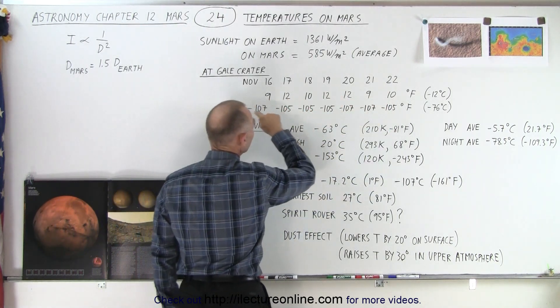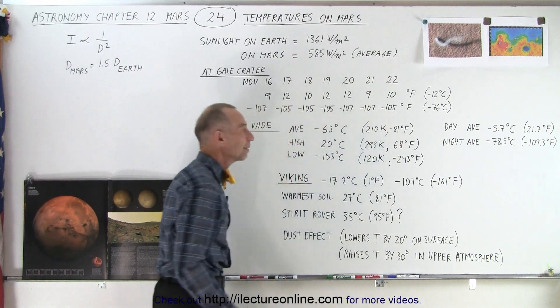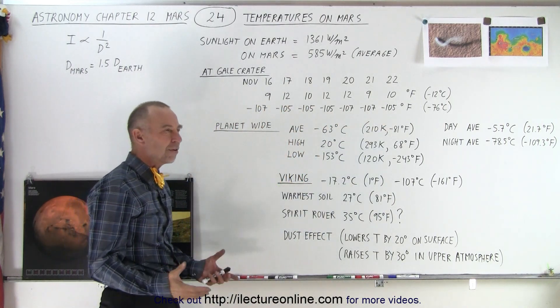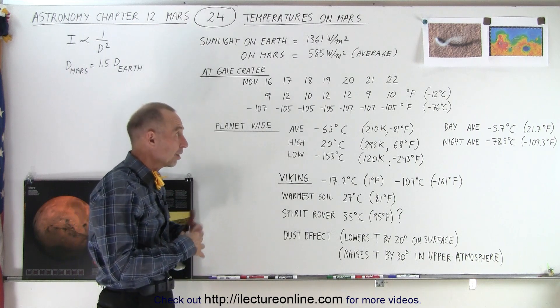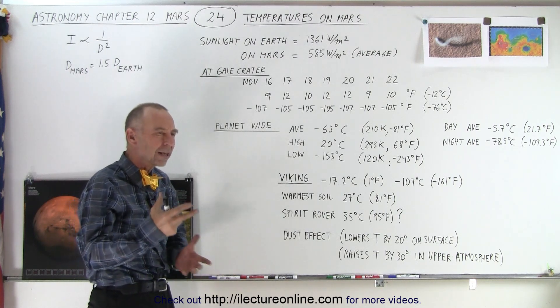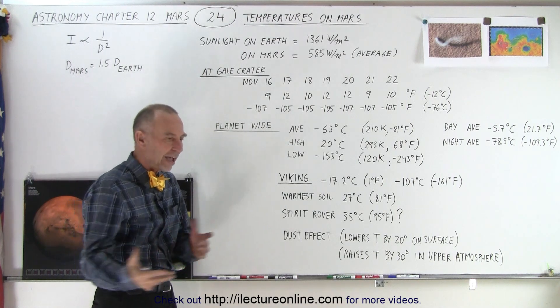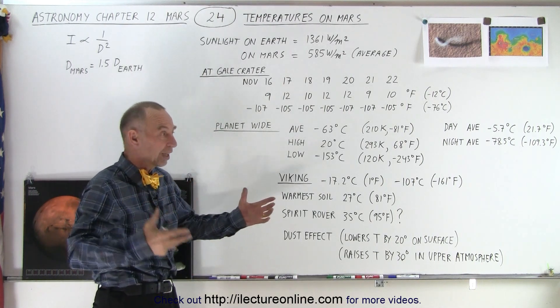During the daytime and for the low of the nighttime, it is very unexpected. On Earth it's not at all that way because on Earth there's a lot of things that can happen to the temperature—vast oceans that temper the temperature.